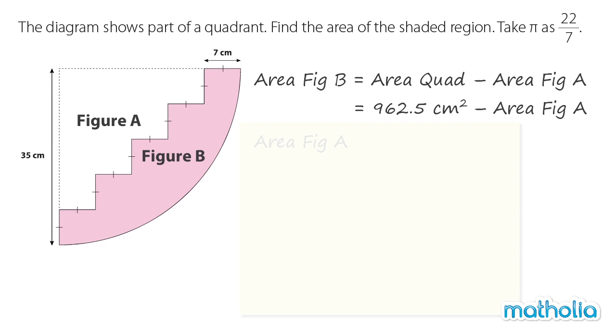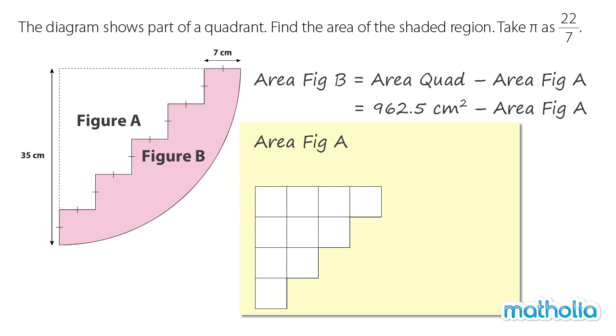Now let's find the area of figure A. Figure A can be divided into 10 identical squares, where each square has a side length of 7 cm. The area of each square is 49 square cm. So the area of figure A is equal to 10 times 49 square cm, which is 490 square cm.